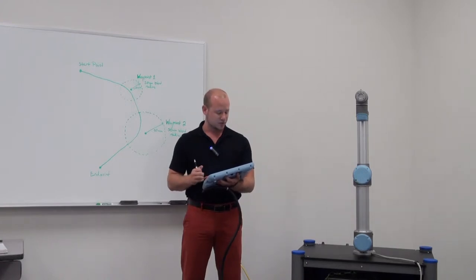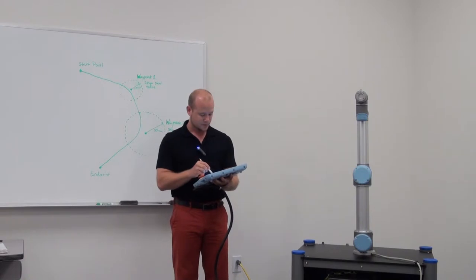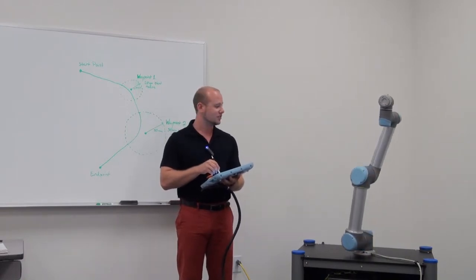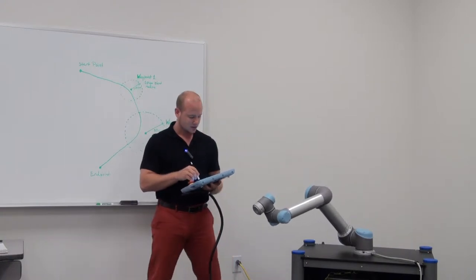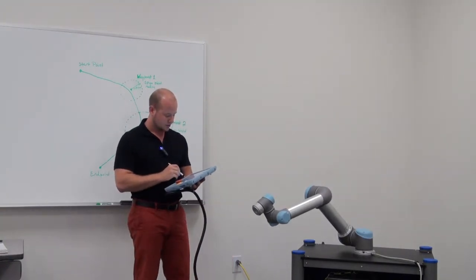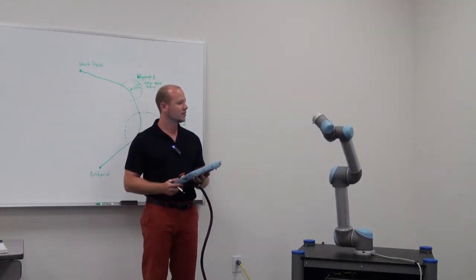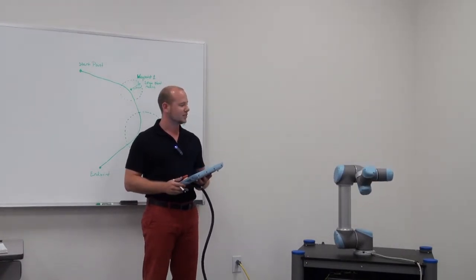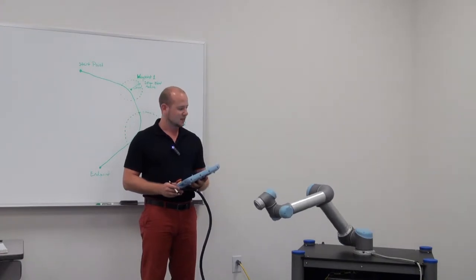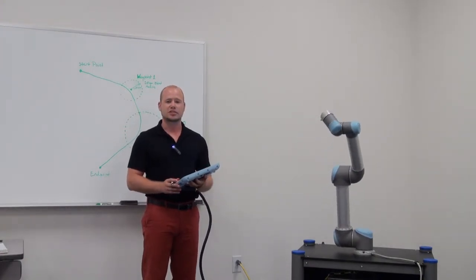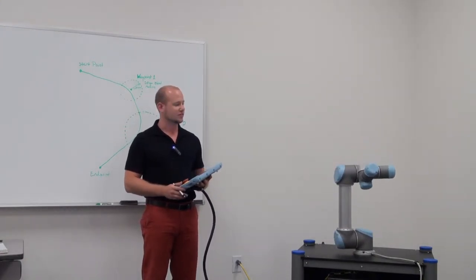I have a program here that will show you four different waypoints using the joint move. Let's move the robot into position its starting point. And these are just four random moves. As you can see, all the joints arrive at the waypoints at the same time. And the tool center point doesn't trace any sort of path. It's just a random arc.